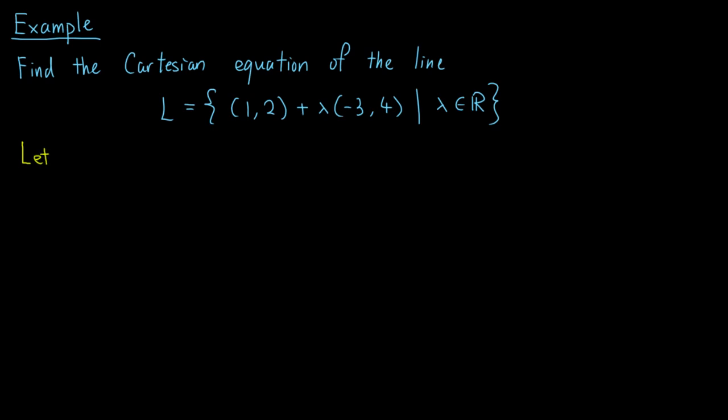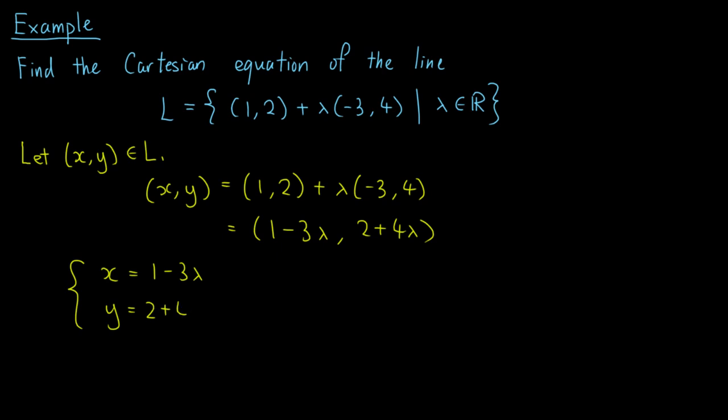To find the Cartesian equation, we have to relate x and y, so let (x,y) be a point on L. Then, (x,y) can be written in the form (1,2) + λ(-3,4), which is equal to (1-3λ, 2+4λ). By equating the coordinates, we get x = 1-3λ and y = 2+4λ. We label these equations as 1 and 2.